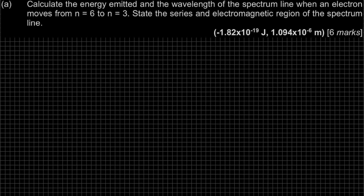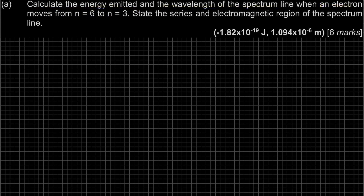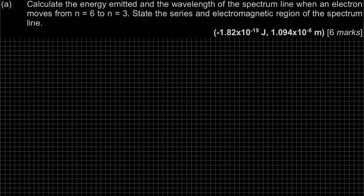Question A: calculate the energy emitted and the wavelength of the spectrum line when an electron moves from n equal to 6 to n equal to 3. State the series and electromagnetic region of the spectrum line. So this part has 3 questions.